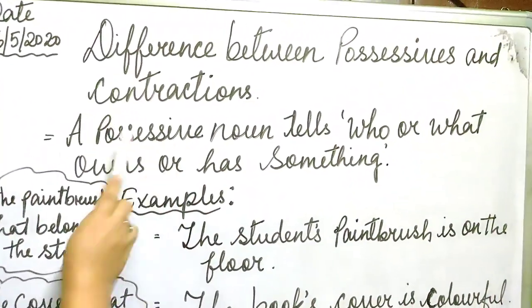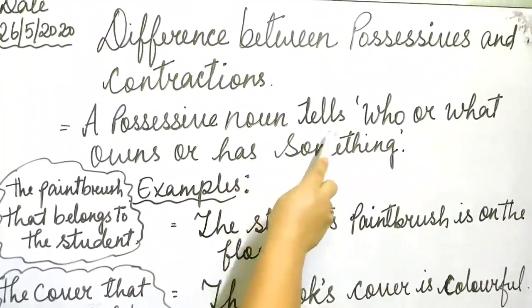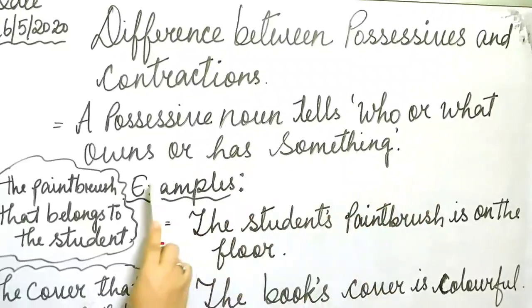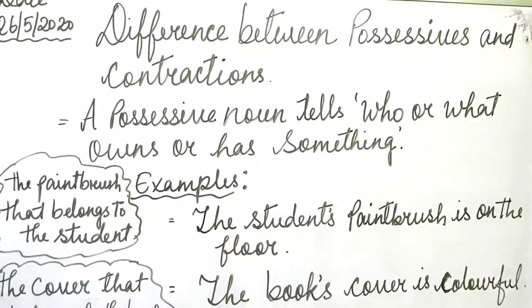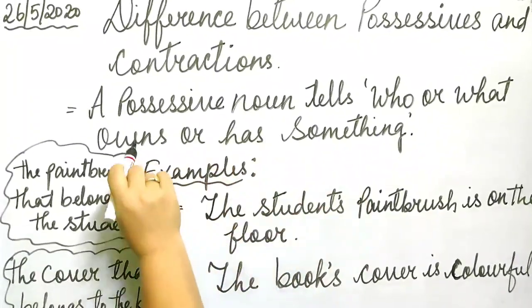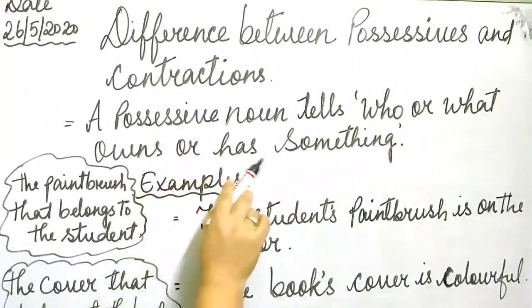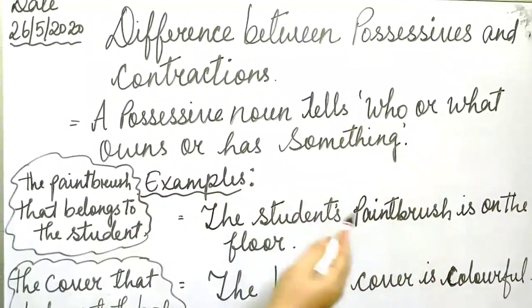I hope you remember contractions. So, difference between possessives and contractions — look at the board. A possessive noun tells who or what owns or has something. I have already explained this in my previous class. Ownership. A possessive noun tells who or what owns or has something. Examples: